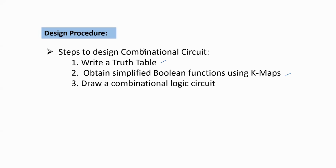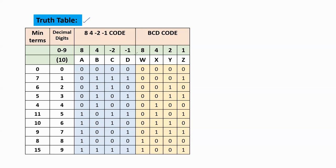Now we start with the truth table. In this truth table, the second column shows decimal digits — the given data. Decimal digits are 0 to 9, totally 10. The input code is 8-4-minus2-minus1 and the output code is BCD. The weights of the 8-4-minus2-minus1 code are 8, 4, -2, -1. BCD means binary coded decimal, also called the 8-4-2-1 code.